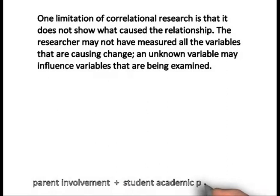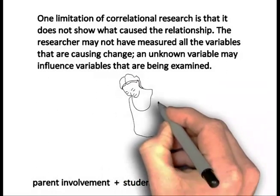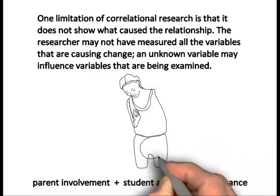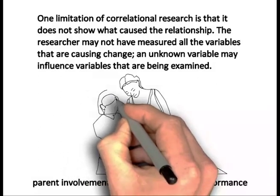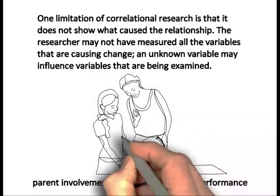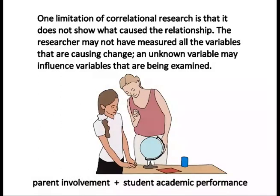If we consider an example in which researchers found a positive correlation between parent involvement and student academic performance, there are many possible explanations. It could be the case that parents who are more involved also have higher incomes and therefore their children may have access to more resources which could influence achievement.